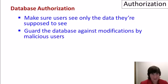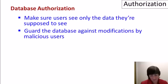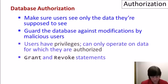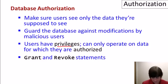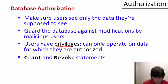To summarize, database authorization is important. It makes sure that users only see the data that they're authorized to see. It guards the database against being modified by malicious users. There's a privilege system, similar to file system privileges, but specific to database constructs. And users can only operate on the data for which they're authorized via their privileges.